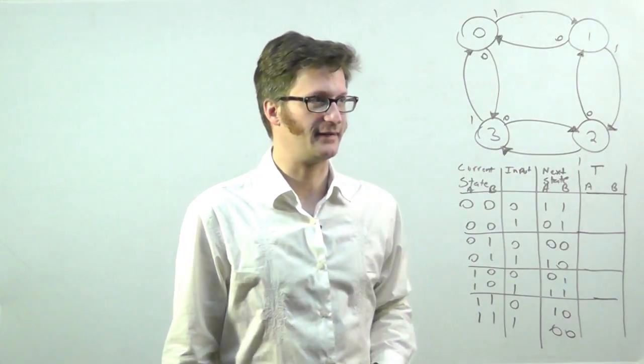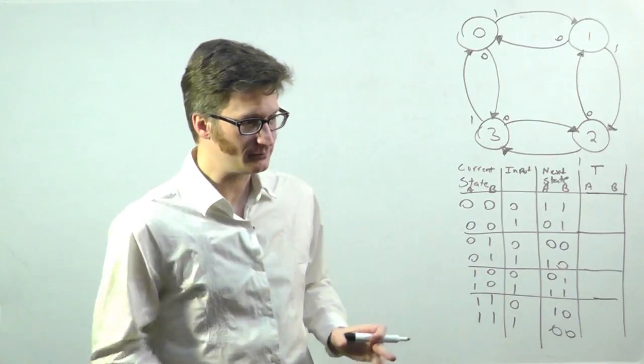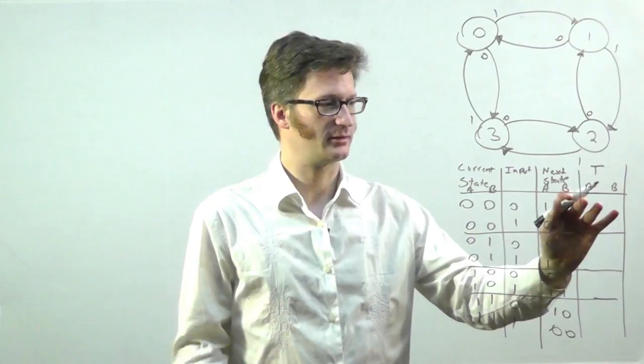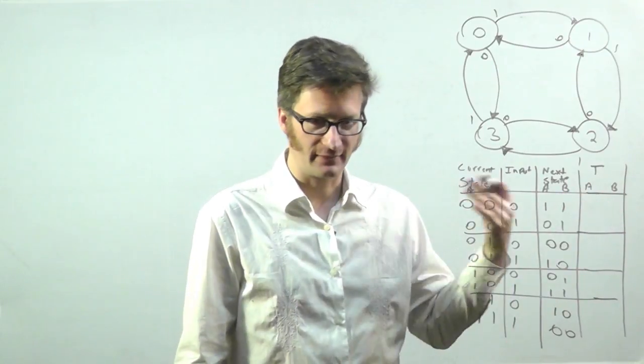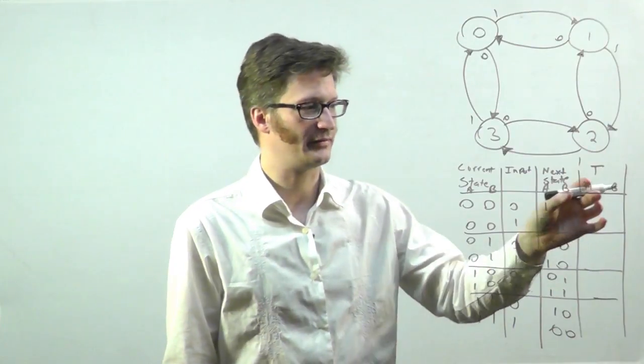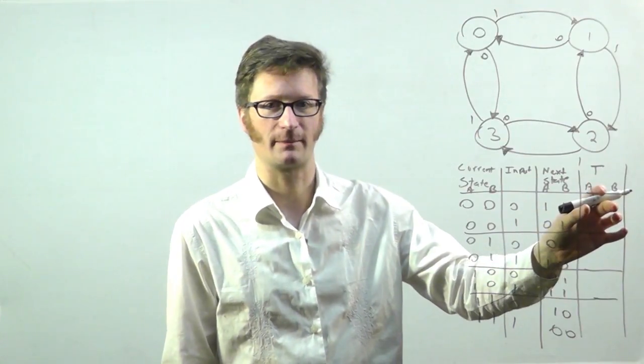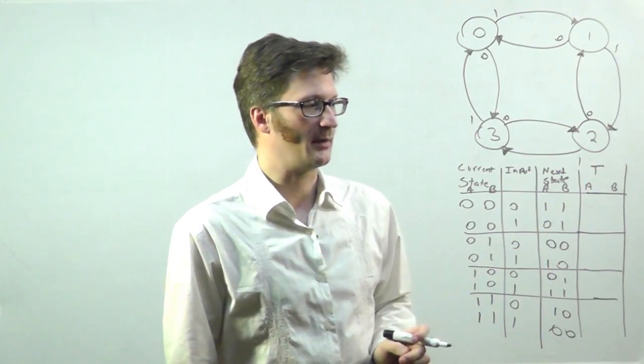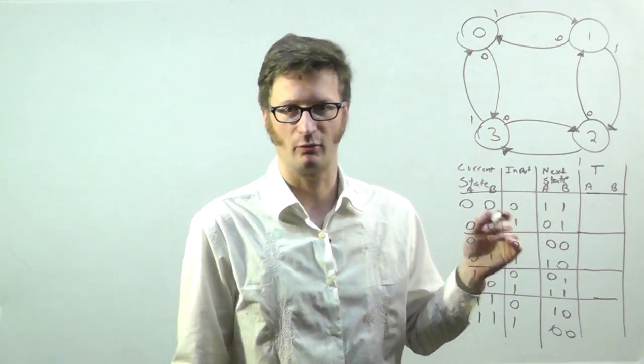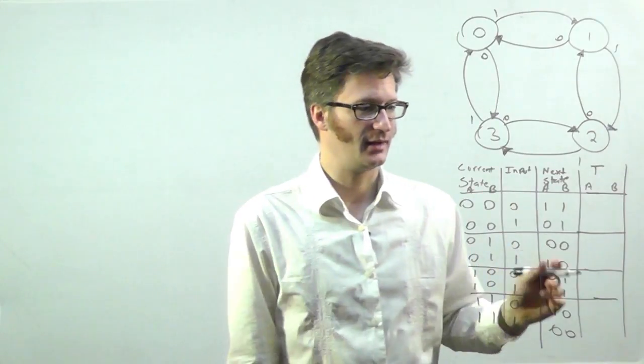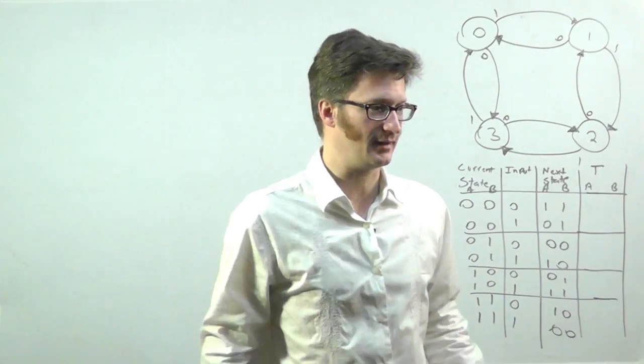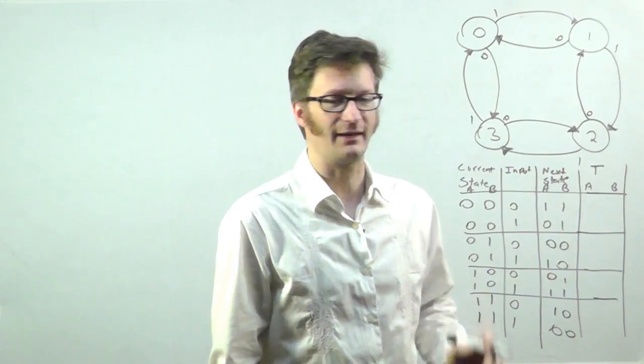So this is the state table for it, and in order to create the input logic to the T flip-flop, what I need to do is create another column here. In this column I'm going to essentially put what the input to the T flip-flop is, and the way I'm going to do that is here's my current state, and here is my next state, and I'm going to look at the bits here.